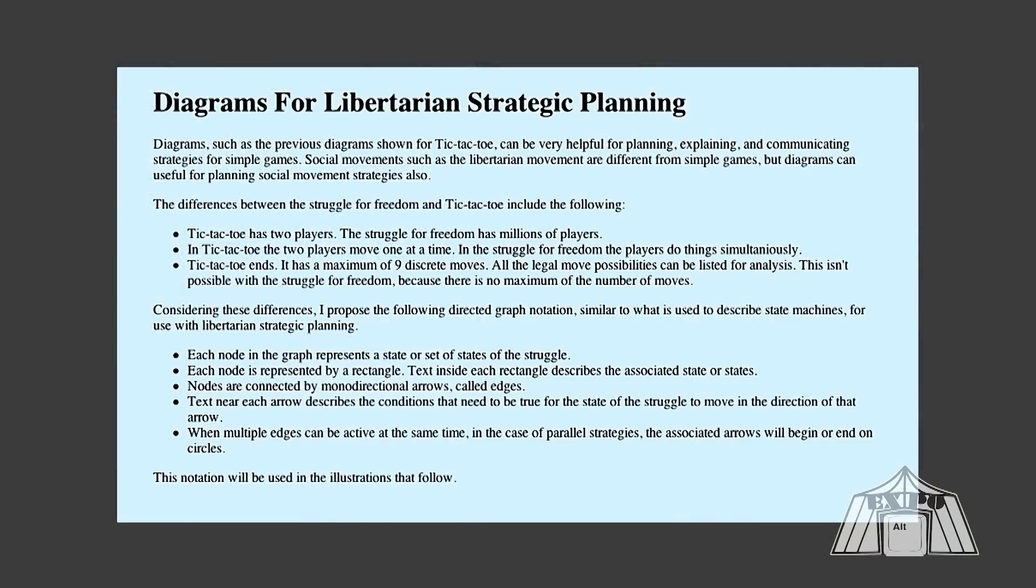Now I'm going to show you some diagrams that I've created. What I wanted to do was use the idea that they use in game theory like tic-tac-toe for diagrams that would help us think about libertarian strategy. Now the differences between the two games are tic-tac-toe has two players, but our struggle for freedom has millions of players. Tic-tac-toe has its two players move one at a time, but in our struggle for freedom, players do things all at the same time. Tic-tac-toe actually comes to an end. It ends after nine moves. But in the struggle for freedom, you can't do that because things can happen. You can be backtracking. Strategies fail. You try something else. It can go on forever. That's the problem.